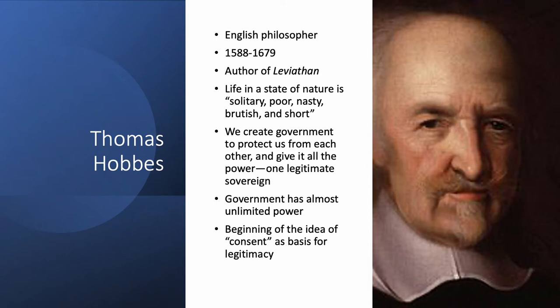Thomas Hobbes lived from 1588 to 1679. He wrote the famous work Leviathan, in which he asked us to imagine life before government — what they call a state of nature. He said that would be a horrible existence: life would be solitary, poor, nasty, brutish, and short. It would be a war of all against all. People would steal from each other, kill each other — it would be chaos.